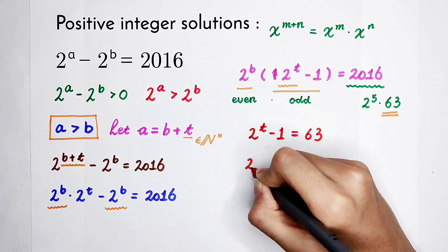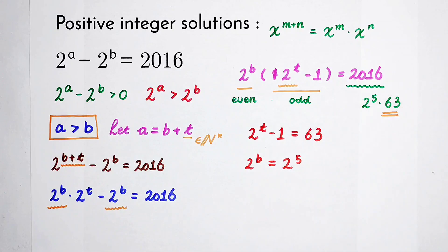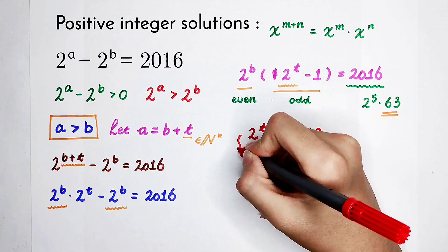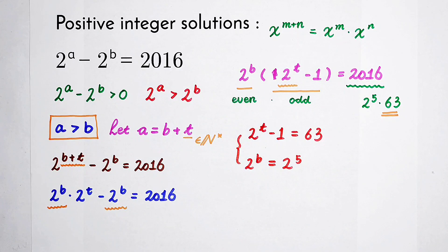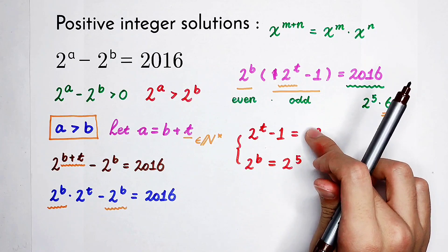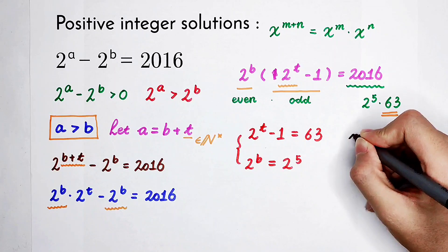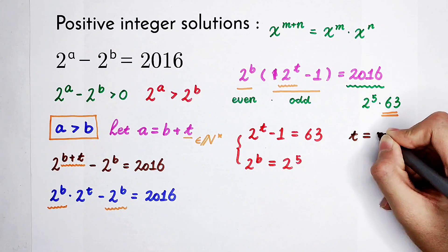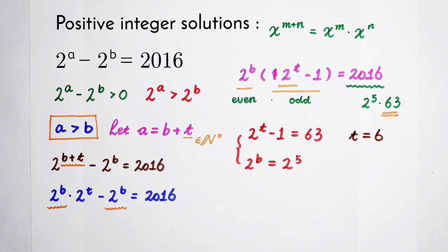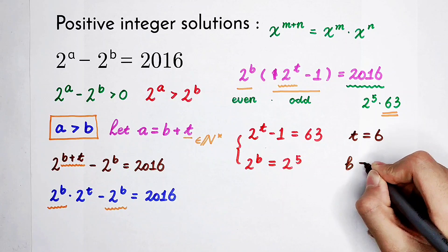Solving for T: 2 to the power of T equals 64, and since 64 is 2 to the power of 6, T equals 6. Solving for B: 2 to the power of B equals 2 to the power of 5, so B equals 5.